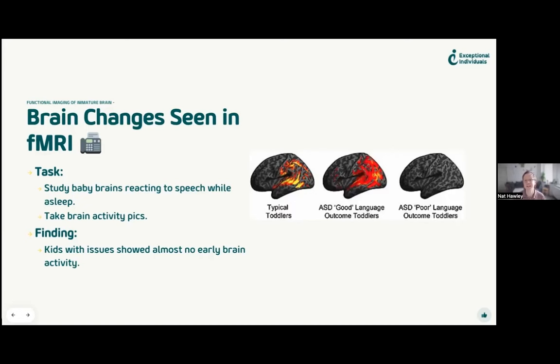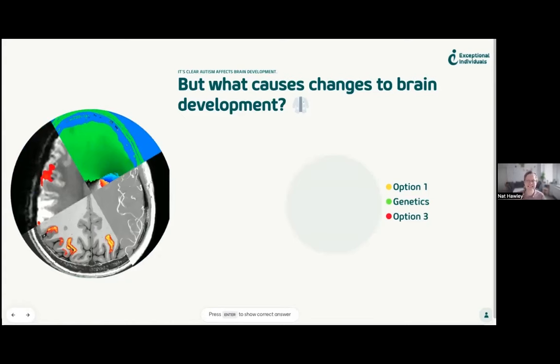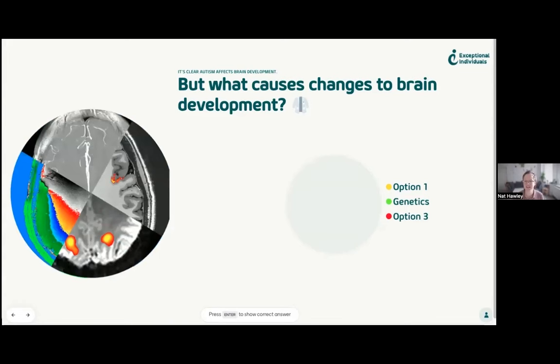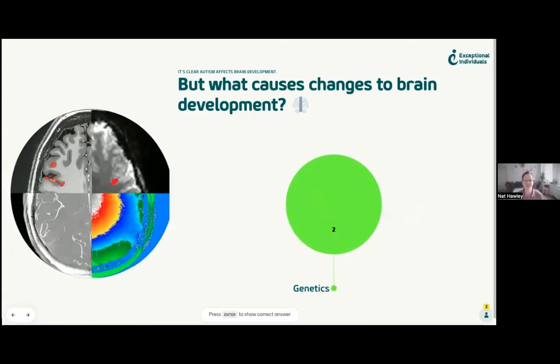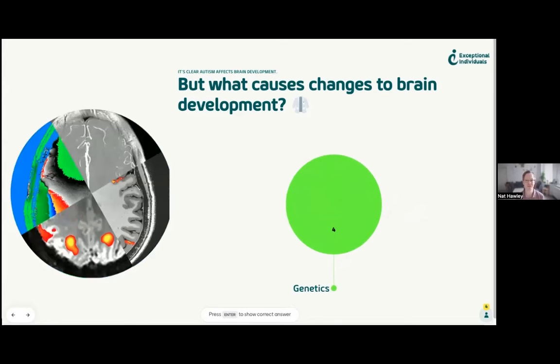We can see that there are differences in those who are likely to be diagnosed with autism. But what actually causes the change? It is genetics — that is what causes the brain to change. It's not just genetics; environmental factors also play a role, but genetics seems to be one of the key ones because environmental factors affect genetics.